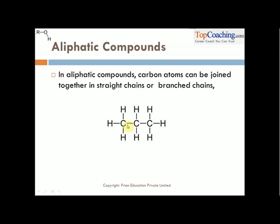Sometimes you will see CH3, CH2, CH3 with one more ethyl group attached to it, which we call 2-methylpropane or 2-ethylpropane. So those are branched compounds. Till the compounds are straight or branched, these are called aliphatic compounds.